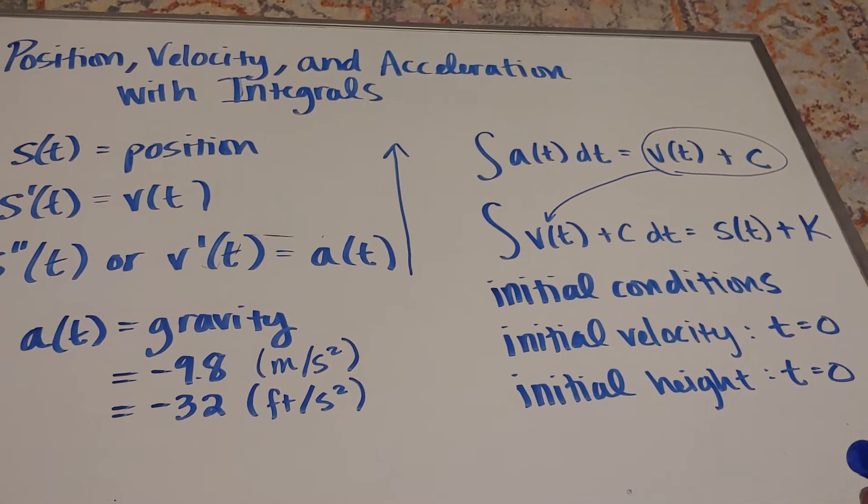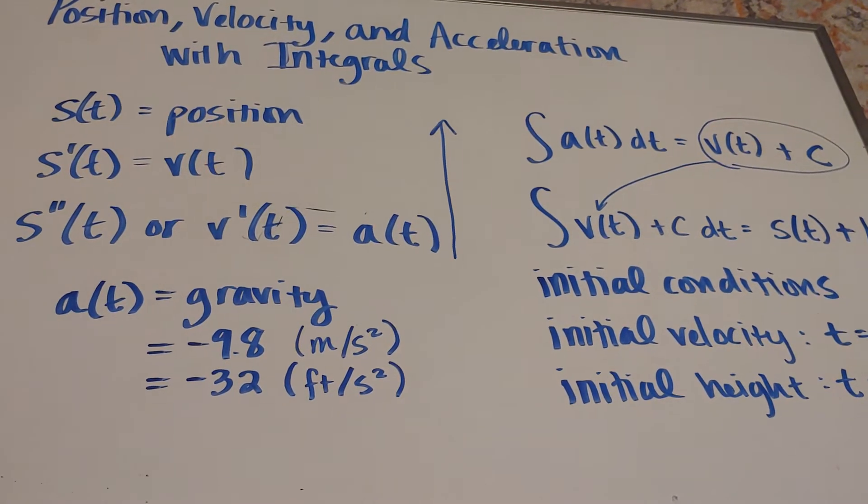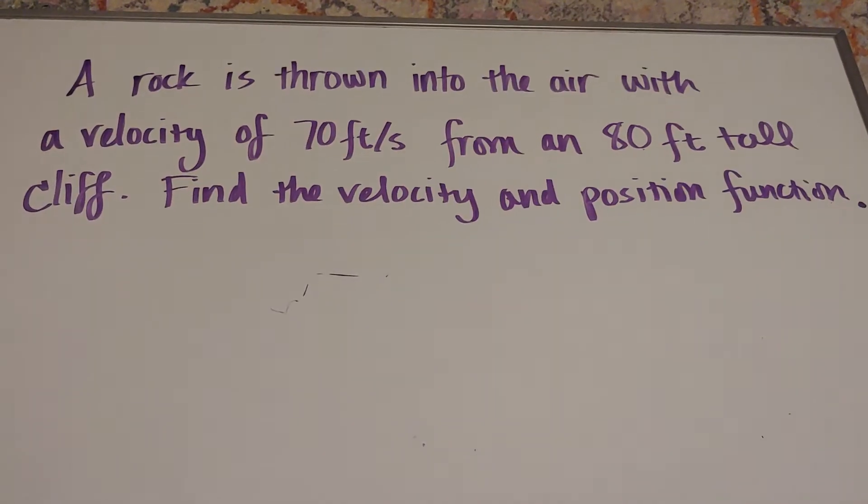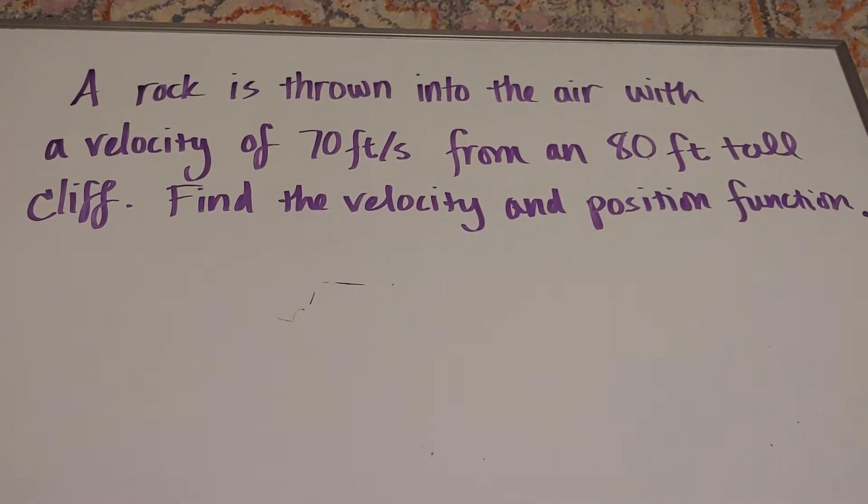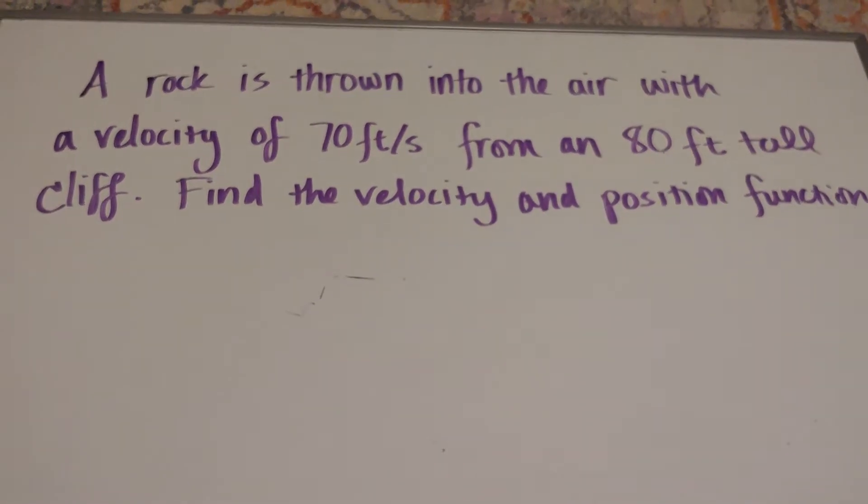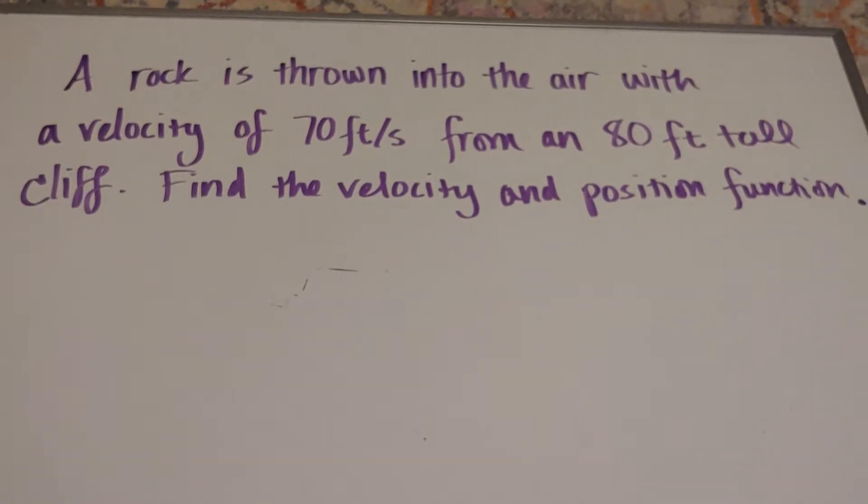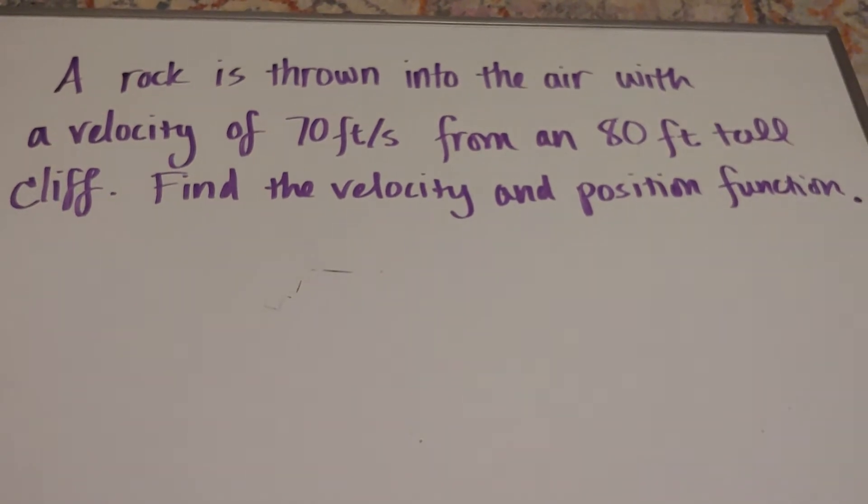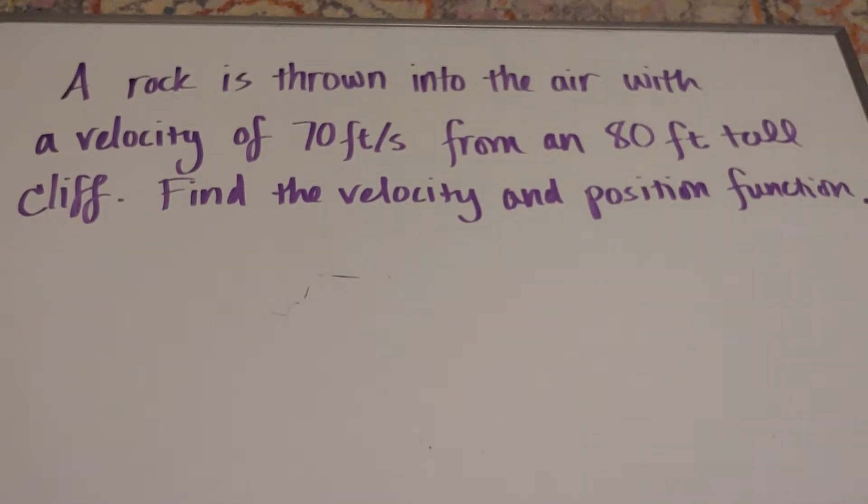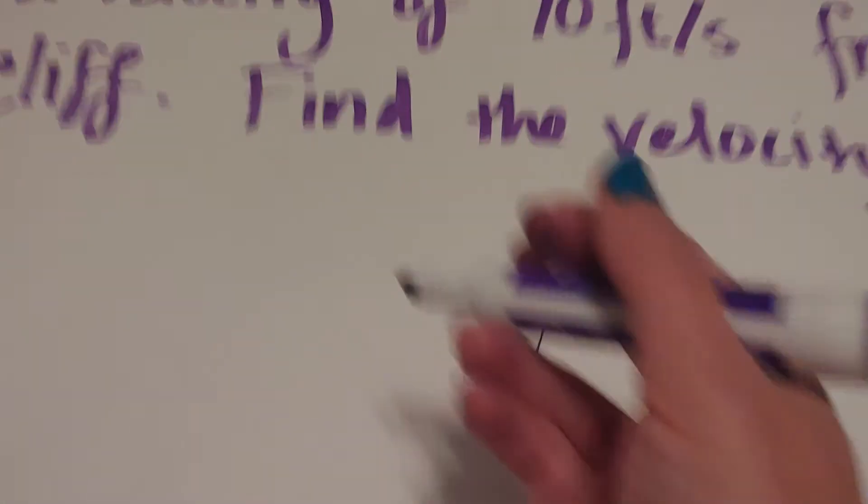So here's our example. It says a rock is thrown into the air with the velocity of 70 feet per second from an 80 foot tall cliff. Find the velocity and position functions given this information. You'll notice it's in feet, so that means that I'm going to use the gravity of negative 32. So that's my acceleration here, my acceleration is negative 32.